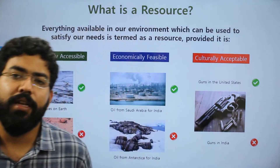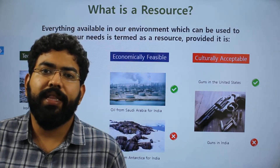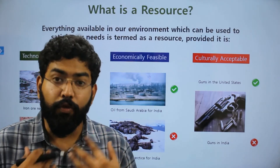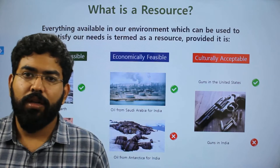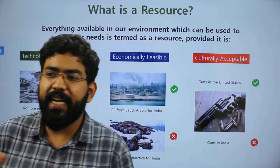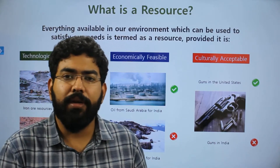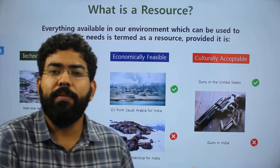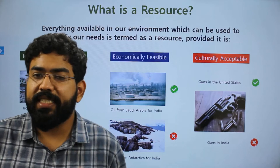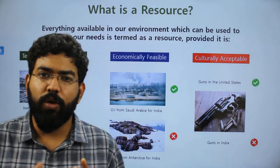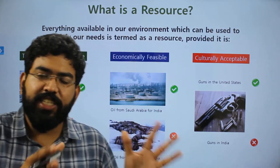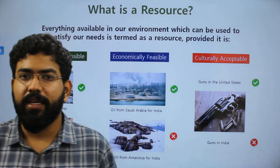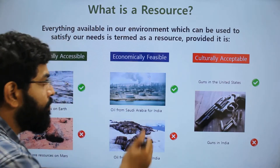The third condition is that it should be culturally acceptable. For example, meat is a food resource — it is culturally acceptable to eat chicken or lamb, but it is not culturally acceptable to eat human meat. So in that sense, human meat is not a food resource. Culturally acceptable is the third and very important condition.